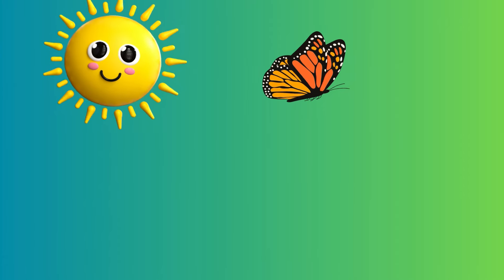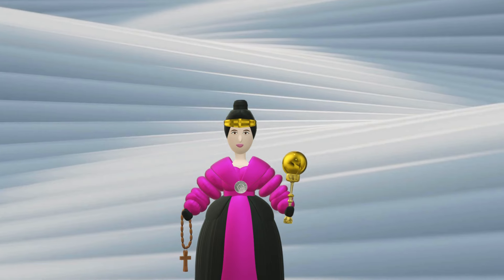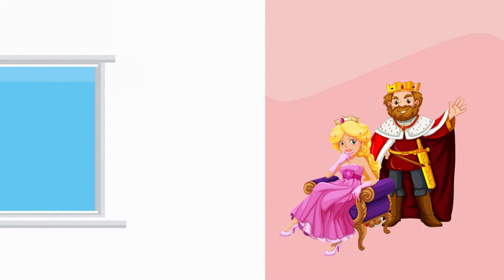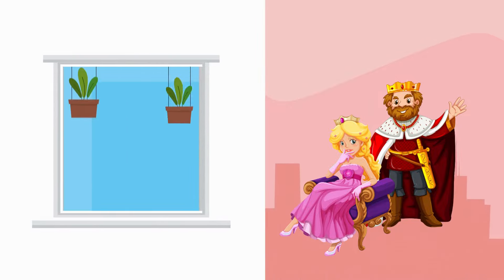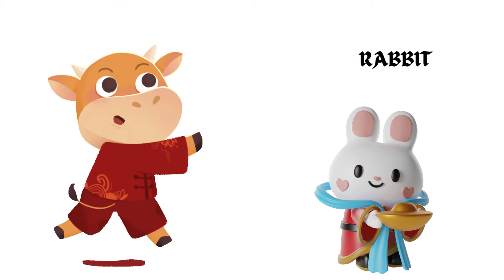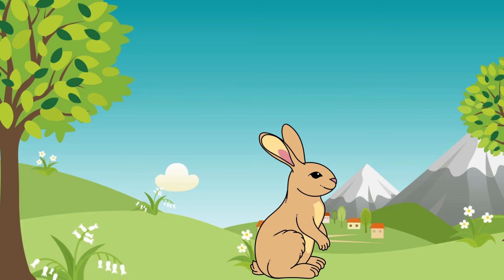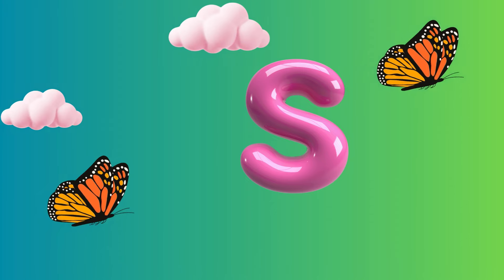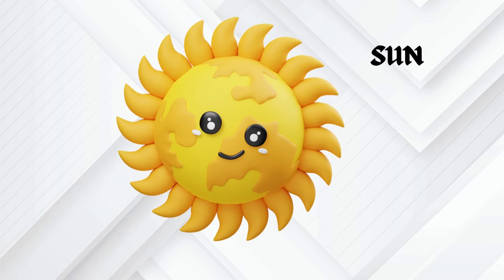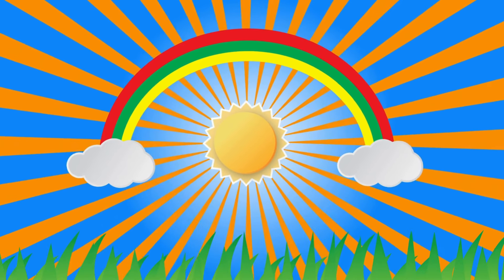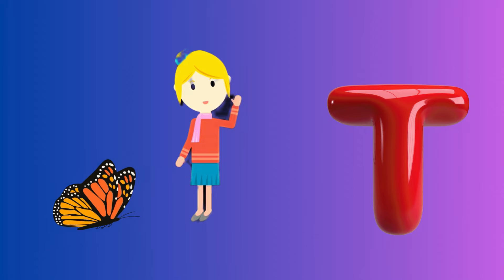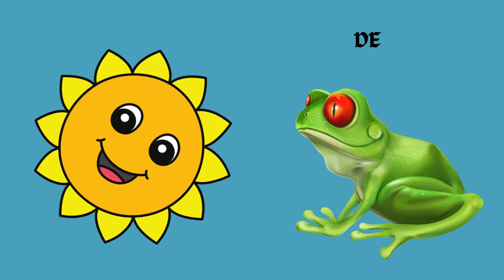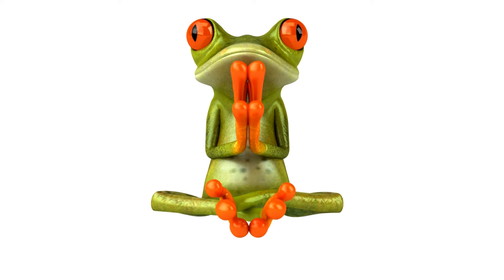Q is for queen, qu-qu-queen. R is for rabbit, r-r-rabbit. S is for sun, s-s-sun. T is for toad, t-t-toad.